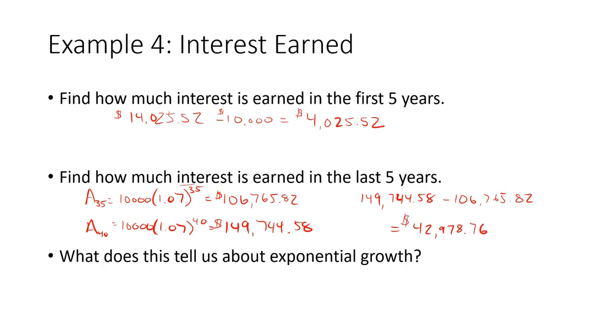In a situation with linear growth, we would expect that the interest earned in the first five years would be the same as the last five years. But because this is exponential growth, the first five years, much, much less is earned. As the number gets larger and larger, and you continue to multiply each time, it gets bigger and bigger, faster and faster. And that's why you get a curve in the data. So for the last five years, you make much more money than you did in the first five years.